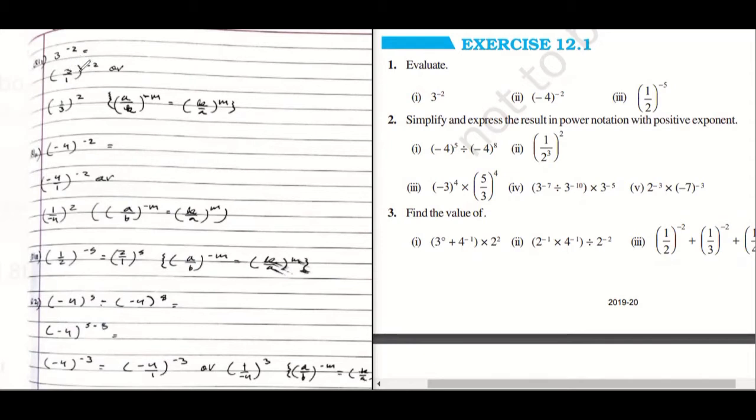Very good Aaron, that you have written 3 upon 1 power minus 2, or 1 upon 3 power 2. As we know, the law is a upon b power minus m equals b upon a power m.